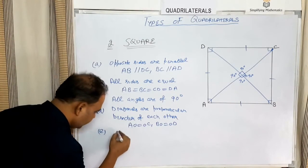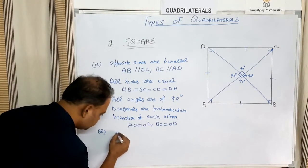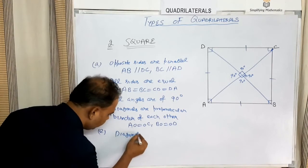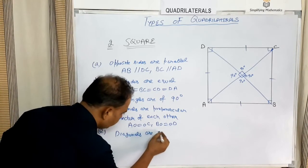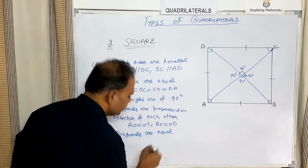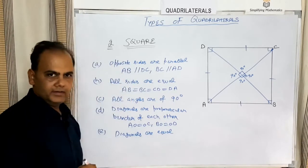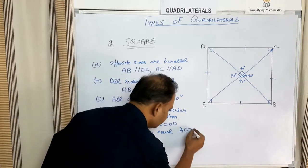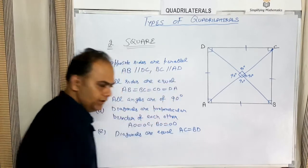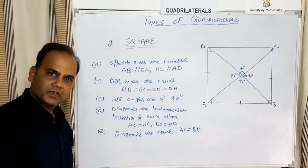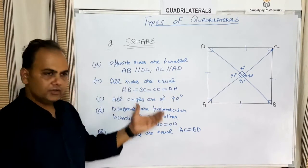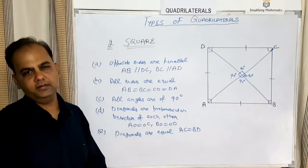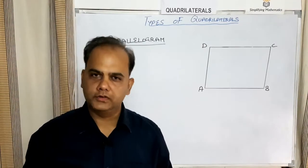One more property of a square is that the diagonals are equal. Based on these properties, you can identify any quadrilateral as a square.